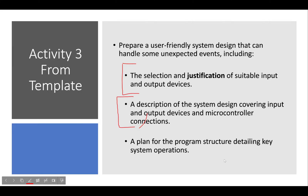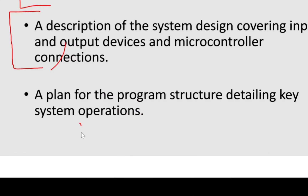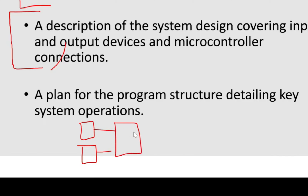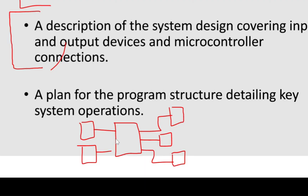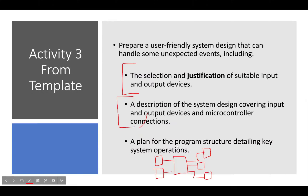A block diagram simply shows in blocks the input devices, the processing, and the output devices. For example, in my system I'm going to have a button as input, a motion sensor as input, going into my processor, and on the output I'm going to have an LED, a buzzer, and an LCD. That's roughly how a simple block diagram will look. The last requirement is a plan for the program structure, which is going to be your pseudocode or your flowchart.